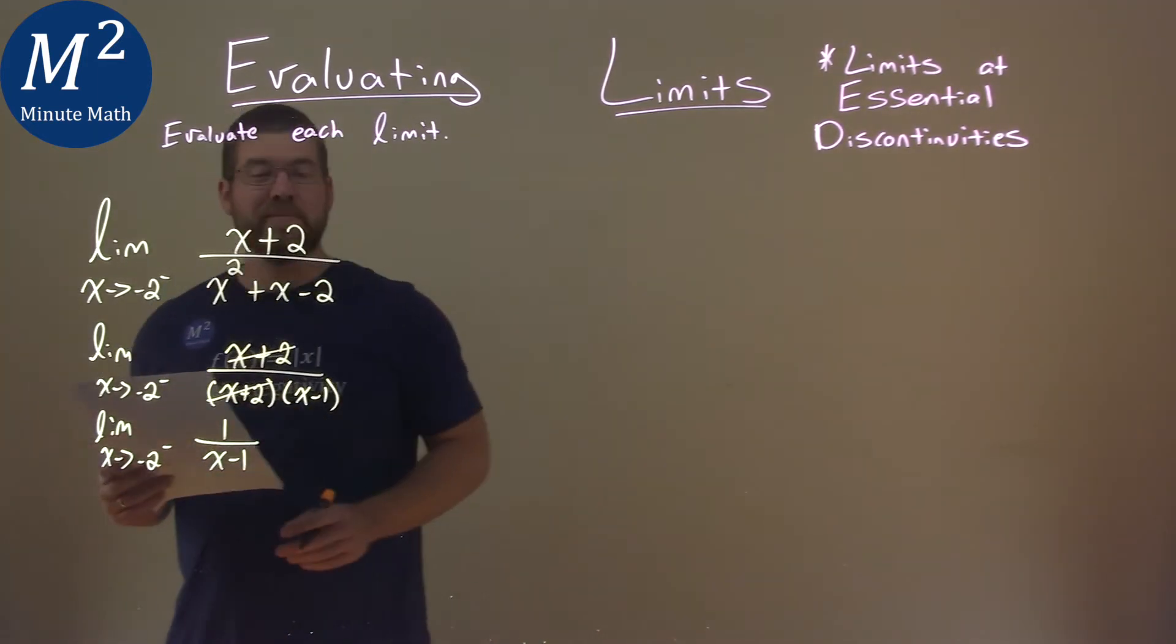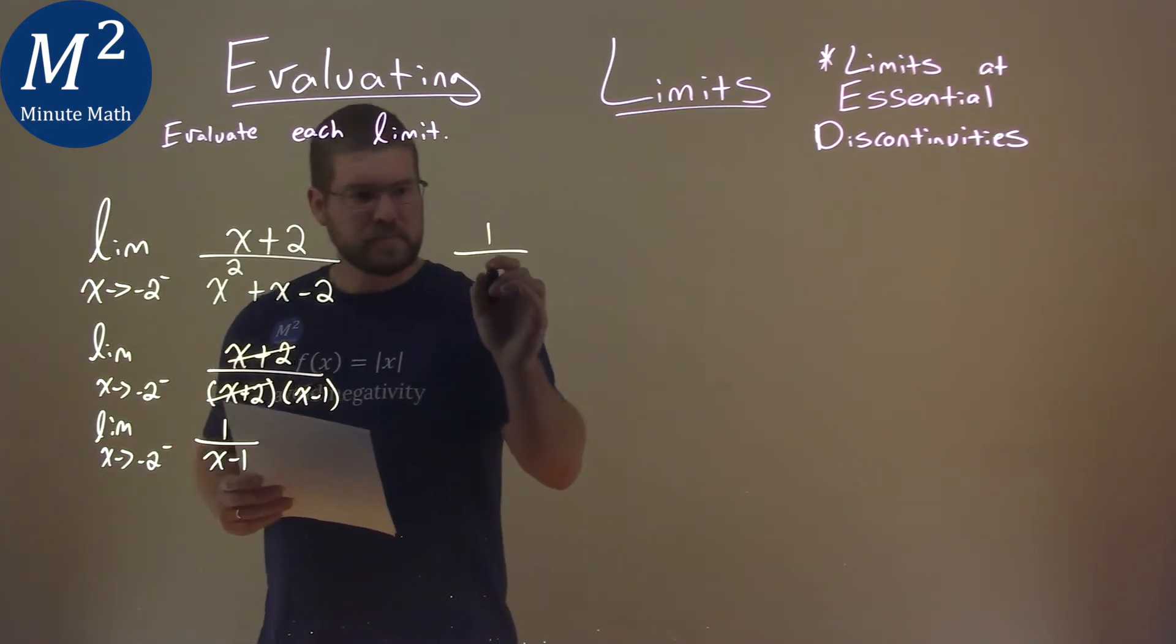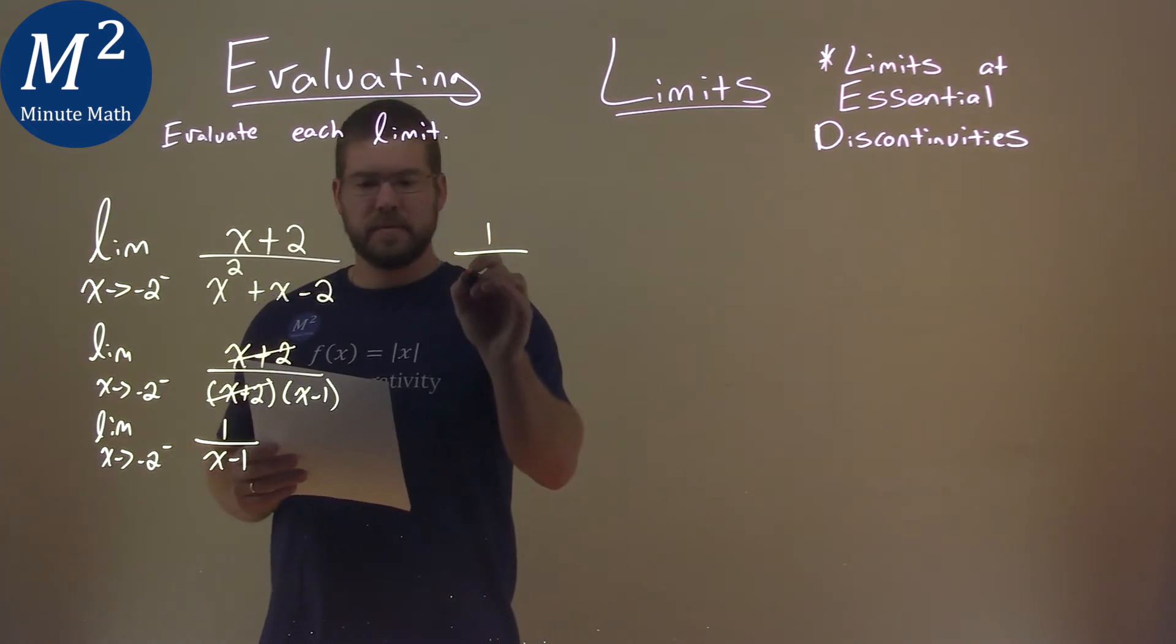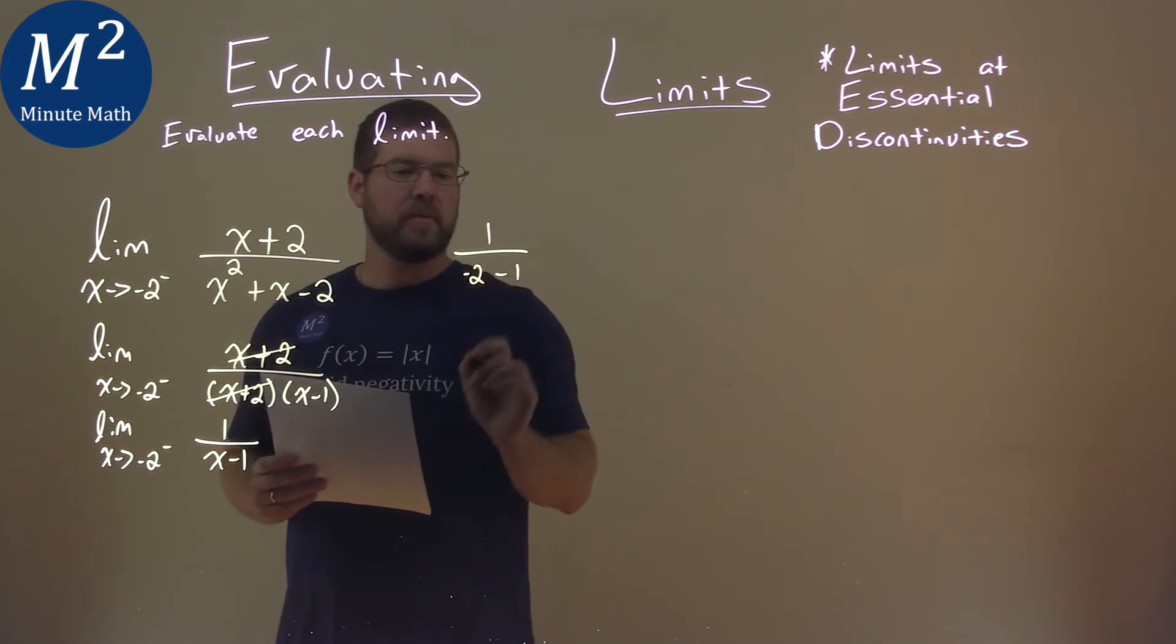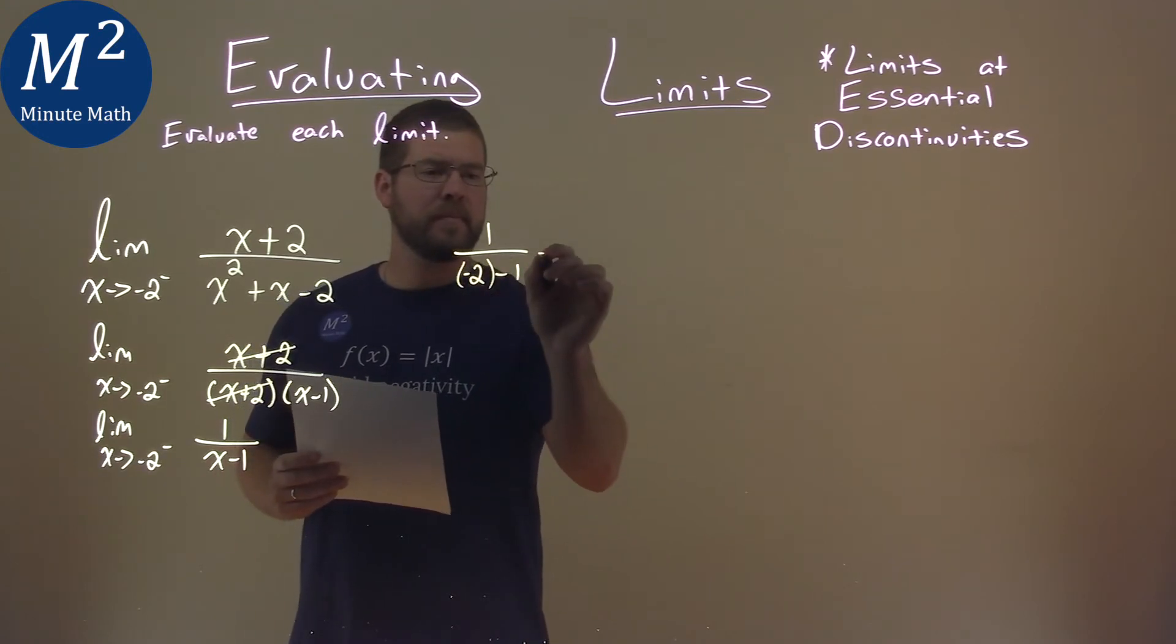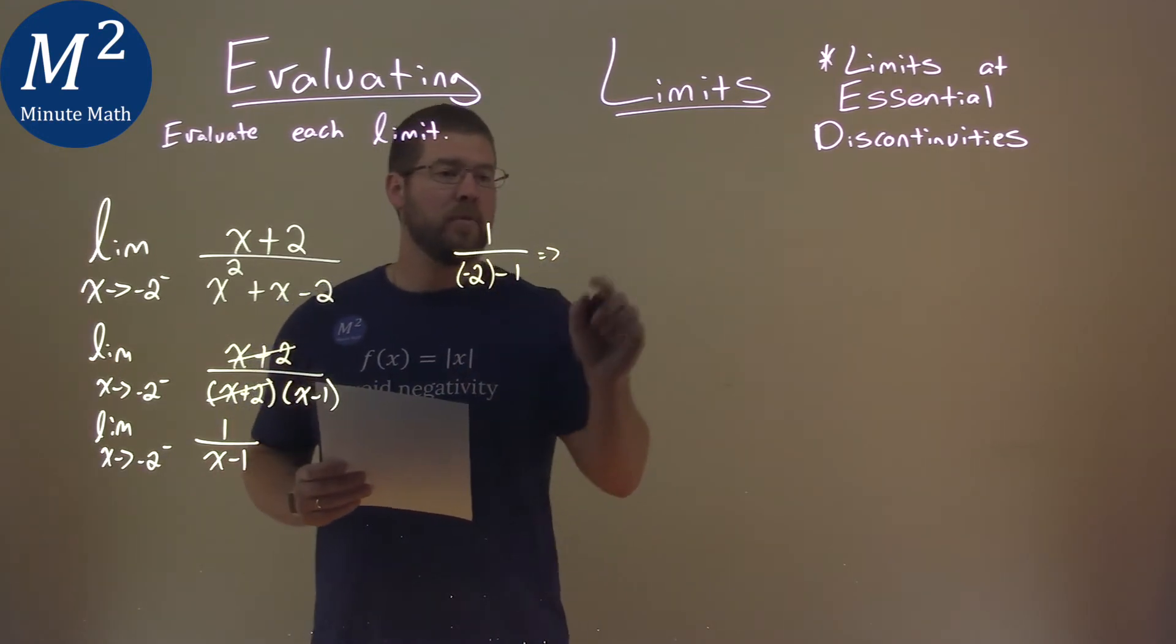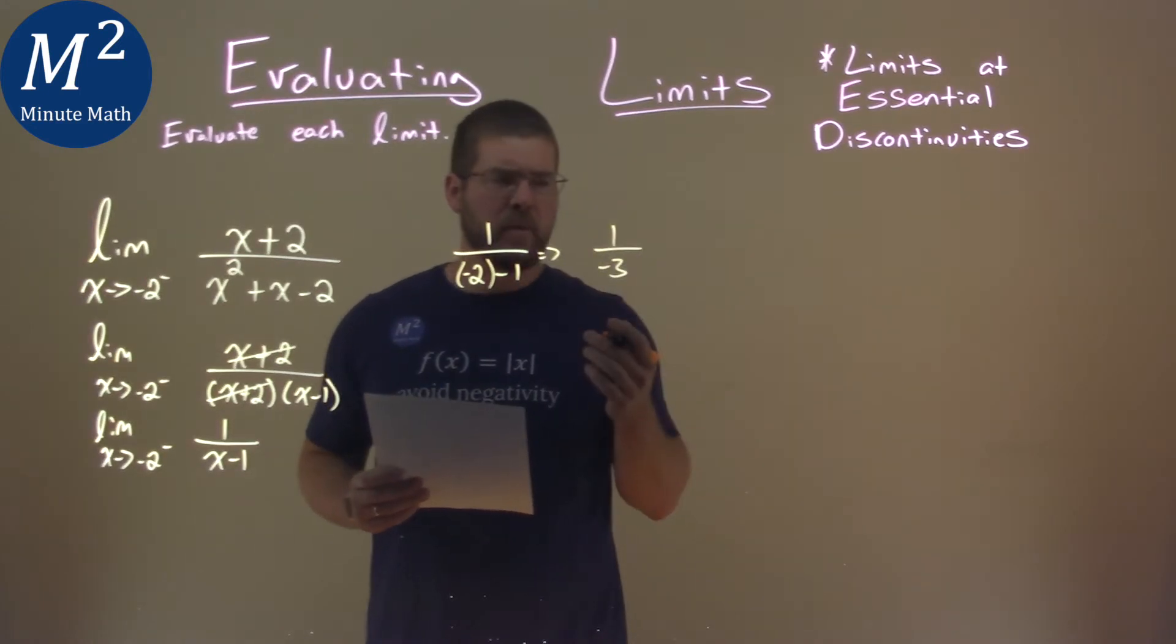So I'm going to plug negative 2 in for x here. We have 1 over negative 2 minus 1. And what happens here? Well, 1 over negative 2 minus 1 is, well, 1 over negative 3, or negative 1 third.